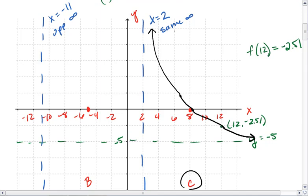Because the multiplicity on that factor was even, we have the same infinity. We start back up at positive infinity on the other side as well.